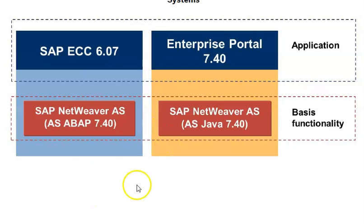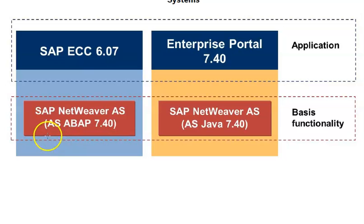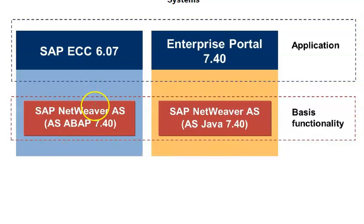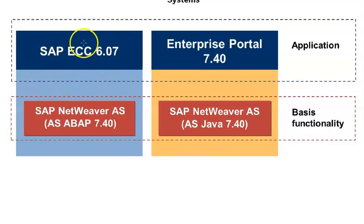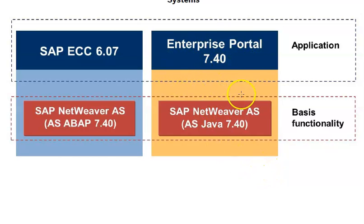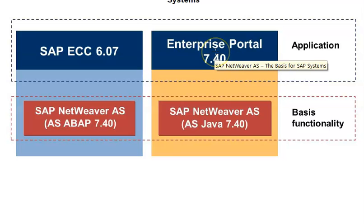When SAP ECC 6.0 was introduced in 2004, they introduced the SAP Netweaver Application Server. It works on the application server. So what is an application server? We have database, application, and presentation tiers. If you want to do coding for ECC — the ERP software — you can do it in ABAP. But if you have to create something on the enterprise portal, you can better use the Java platform. So you can write Java code and see it in the portal. For website or portal design, Java is the preferred option.